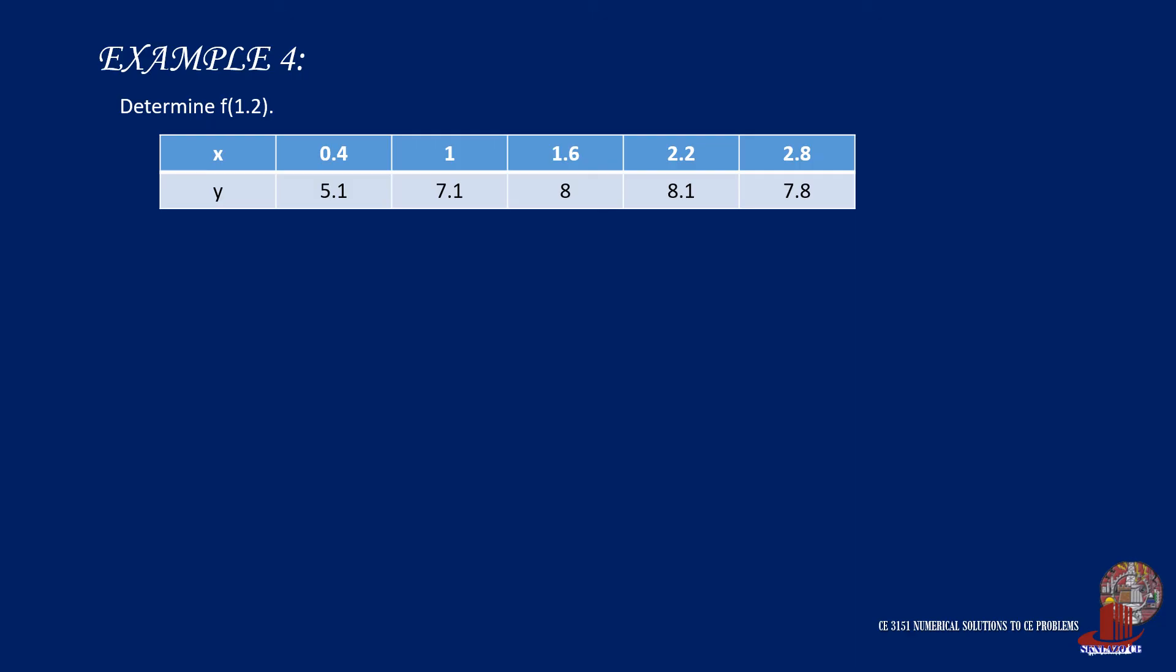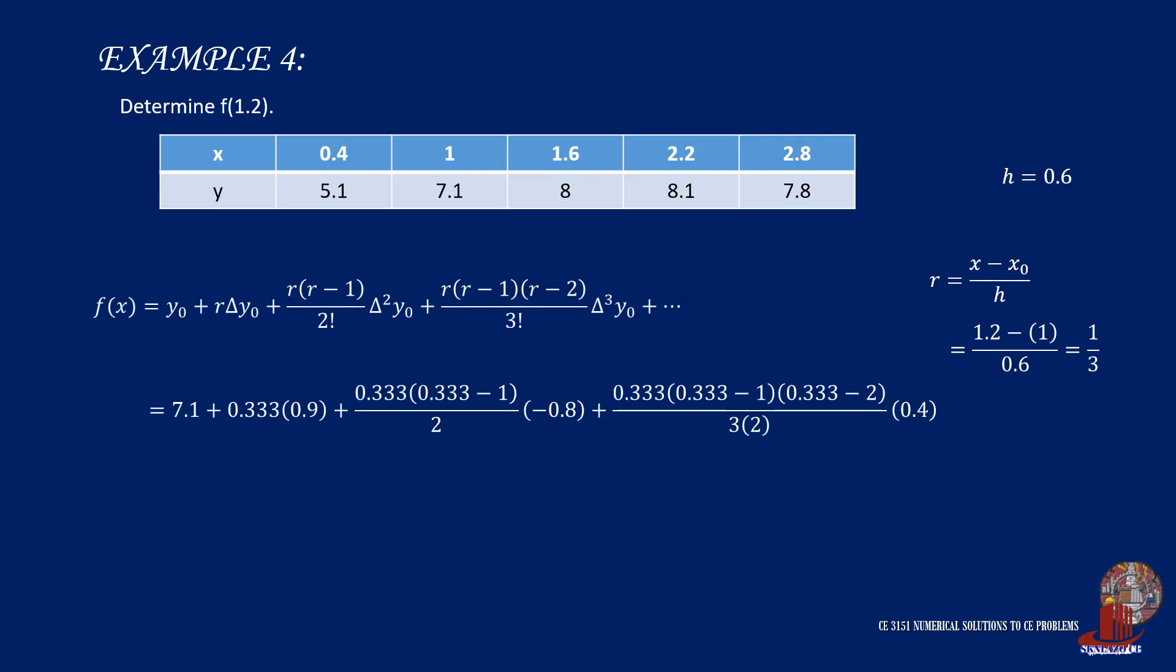By using the second point, y0 is taken as 7.1, h is still 0.6, but r will be computed as 1.2 less 1, all over 0.6, and that is 1 third. By placing the values into the formula, we arrive at f(1.2), which is equal to 7.335803.